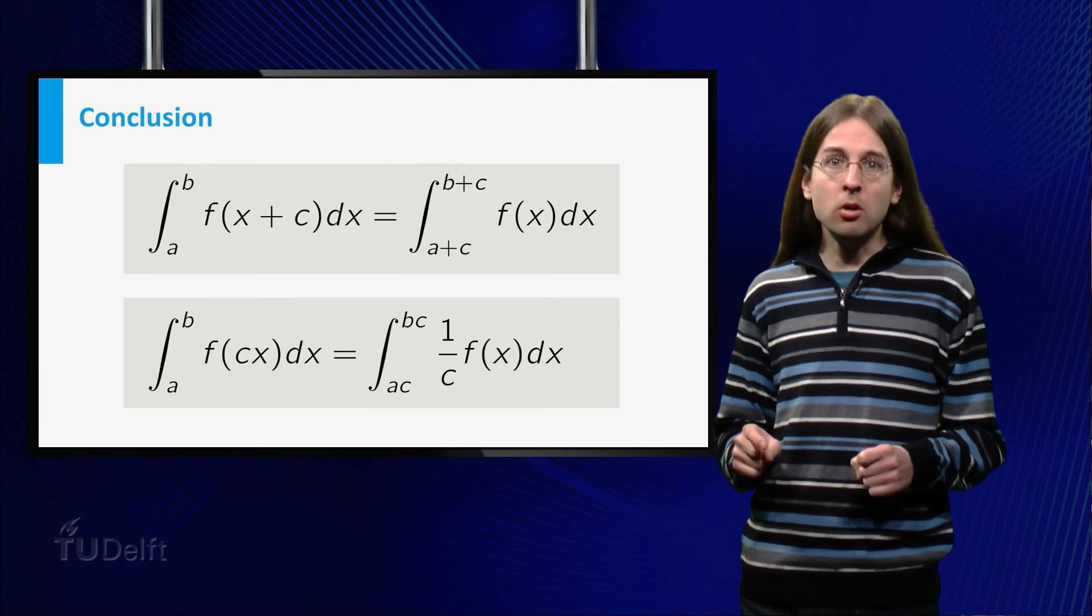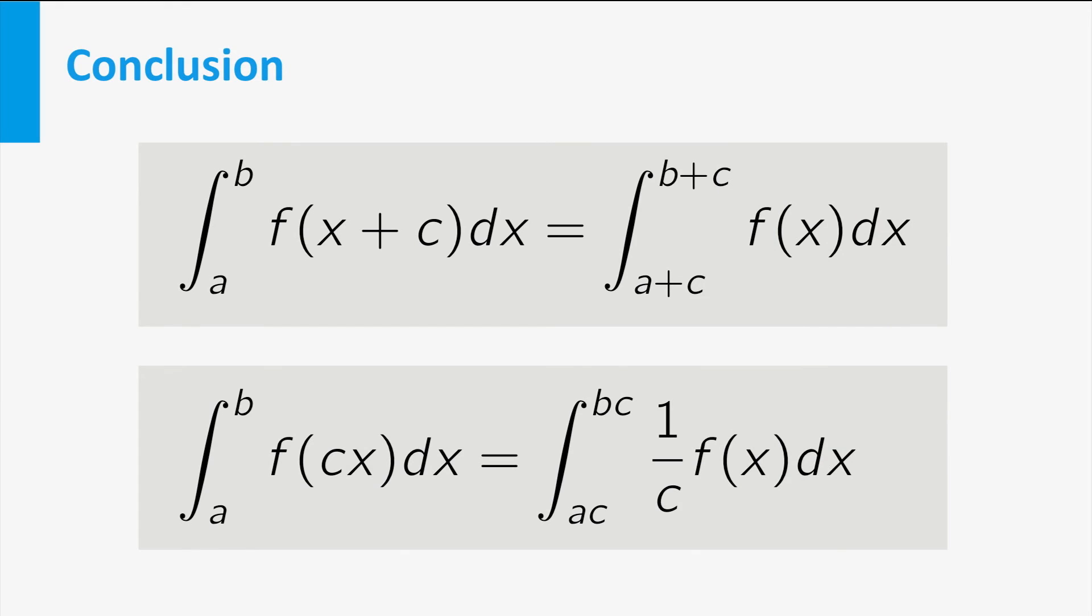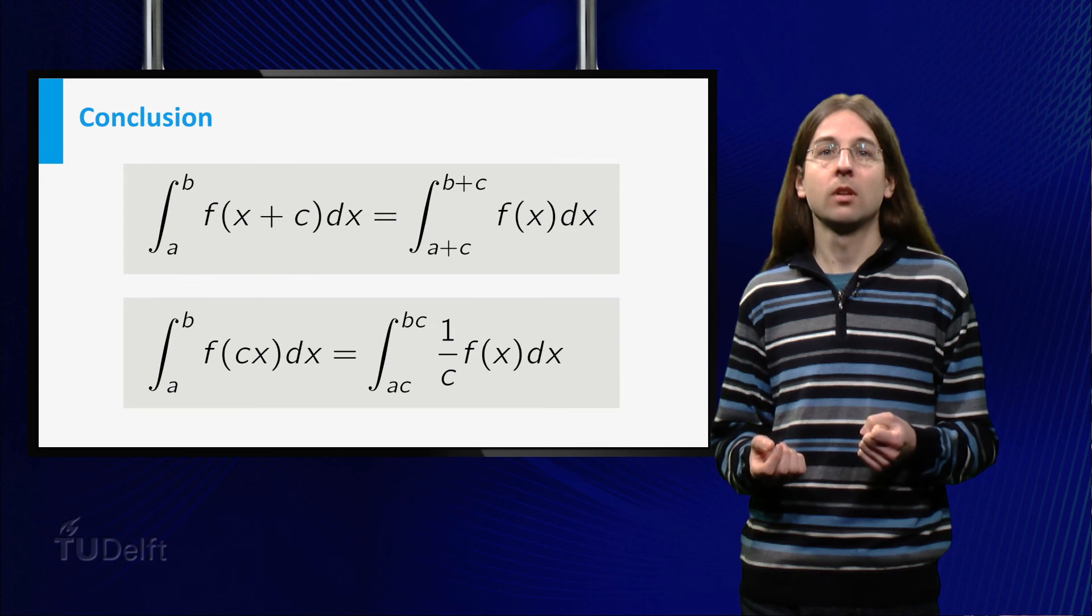Remember that this only works for linear substitutions. These rules do not allow you to calculate the anti-derivative of functions like cosine of x squared, where we plug a non-linear function such as x squared into the cosine. Now, try to calculate the integral of cosine yourself.